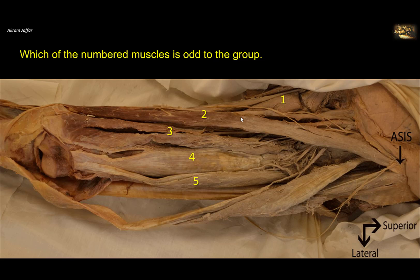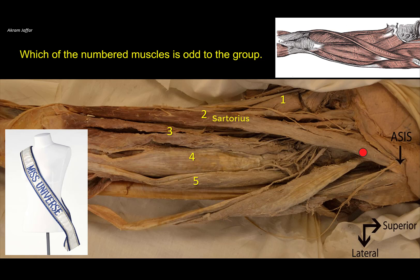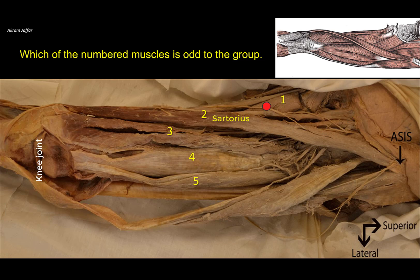Which of the numbered muscles is odd to the group? Let's identify the group of muscles. This is a dissection of the front of the thigh. You can see here the superior and the inferior. The knee joint has been dissected. These are the condyles of the femur and this is indicated as the anterior superior spine. The muscle attached to it is the sartorius muscle — narrow with parallel fibers, passing obliquely like a sash from the anterior superior spine, going medially, forming the lateral boundary of the femoral triangle. Then it crosses the knee joint and is attached to the upper part of the medial aspect of the tibia. On the medial side of the femoral triangle is the adductor longus muscle. The other muscles belong to the quadriceps femoris muscle.